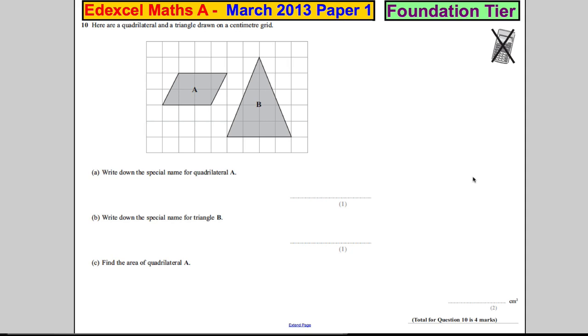Okay, Question 10. Here we have a quadrilateral—this one's the quadrilateral, a four-sided shape—and a triangle on a centimeter grid. Write down the special name for quadrilateral A.